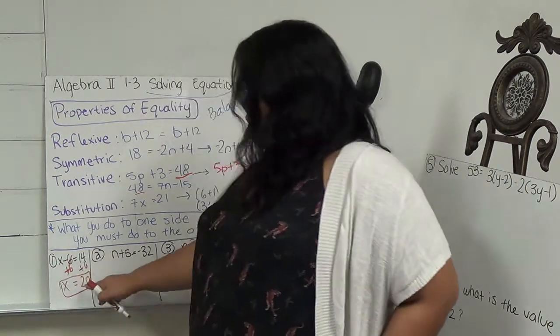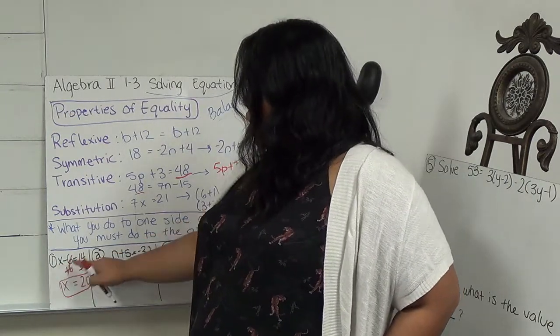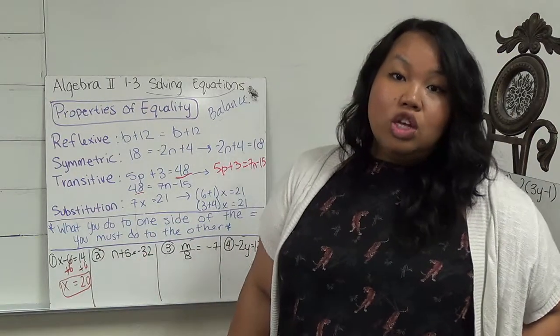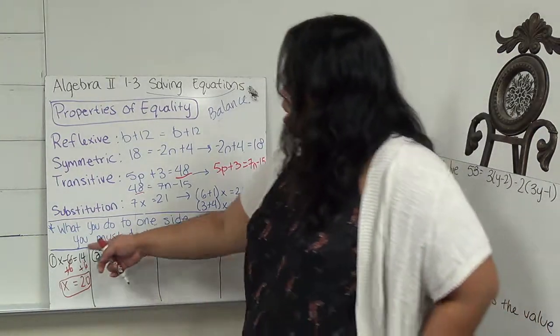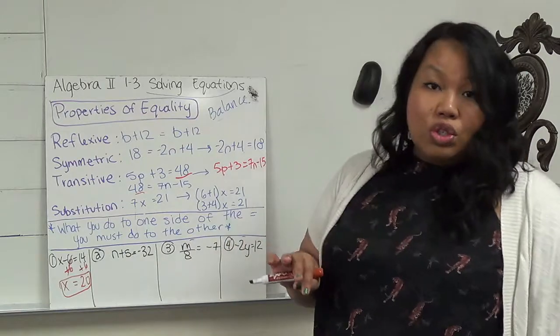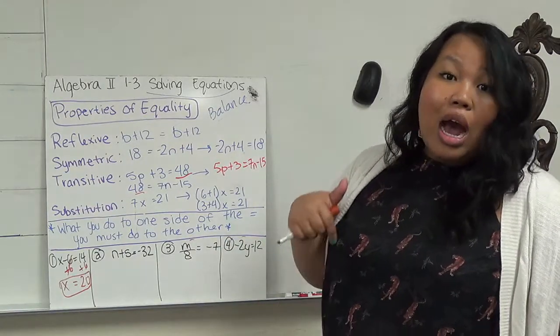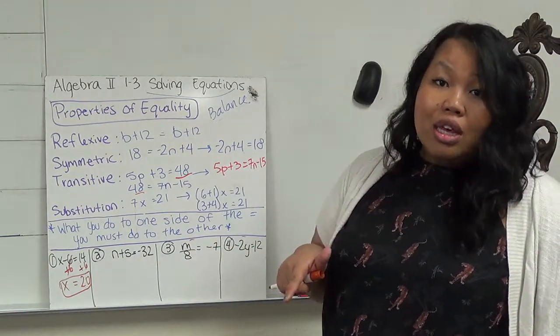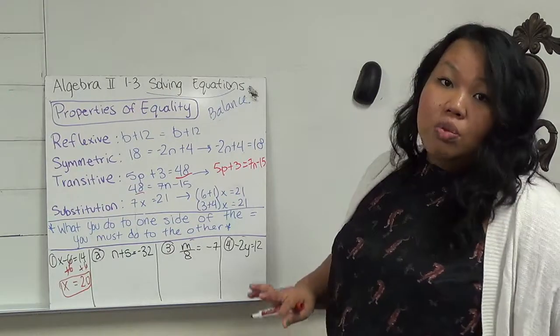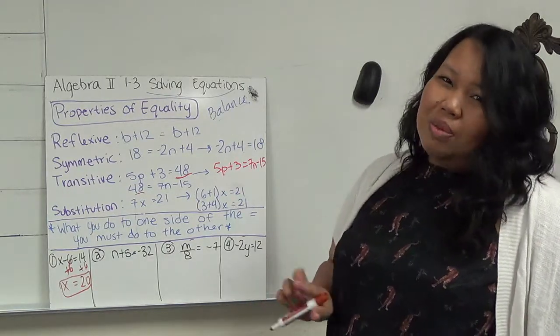So what this means is if I take 20 and put it in for x, 20 minus 6 equals 14. So if I plug it in, it should give me an equal value. If any of those don't work, if I'm not balancing, if I plug it back in and I'm not getting the balance equation on each side of the equal sign, something went wrong.